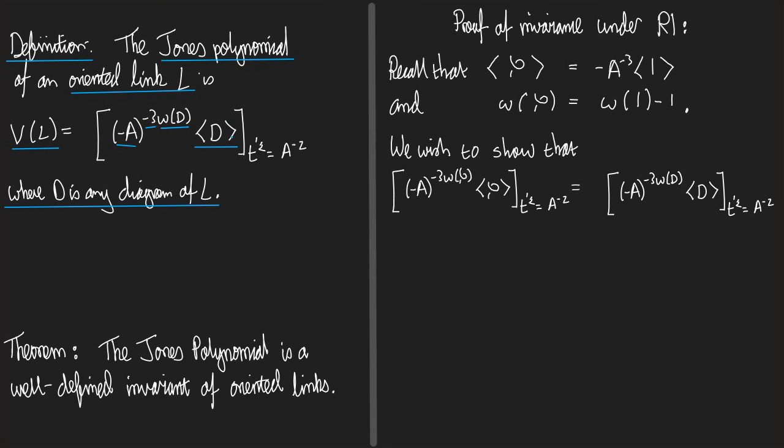So, the Kauffman bracket is a Laurent polynomial in the variable A, so is this coefficient here. Multiply them together, you get a Laurent polynomial in the variable A, and then I make the substitution. T to the 1/2 is A to the minus 2. This is by convention that we write it like this, but really, what we do is we take A, and we replace it everywhere we can see it, by T to the minus 1/4. That's what it really means. And then that's the Jones polynomial.